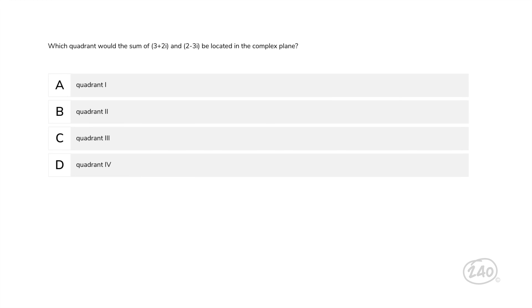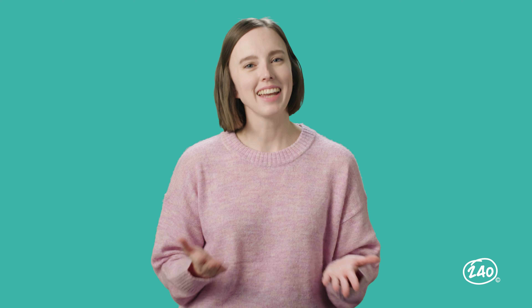Start by finding the sum of the complex numbers. Add the real parts: 3 plus 2. Then add the imaginary parts: 2i plus negative 3i equals negative 1i. To graph on the complex plane, start at the origin and move 5 right, then down 1i. This reveals that the sum (3 + 2i) + (2 - 3i) equals 5 minus i, which is located in quadrant 4. That means D is our correct answer.